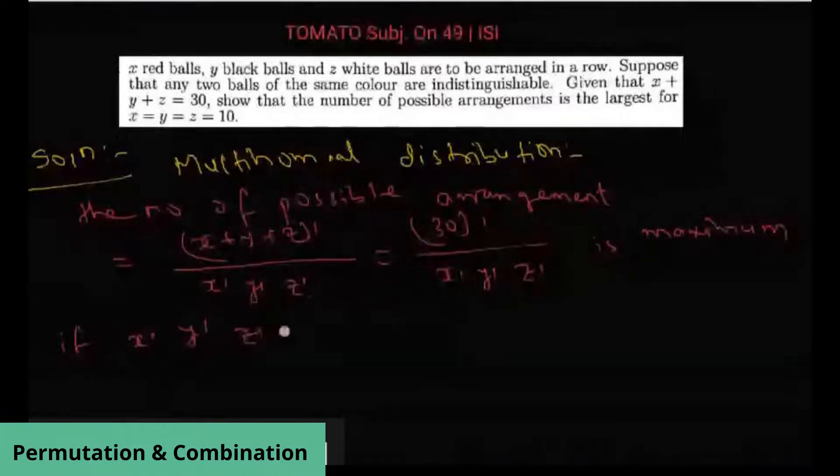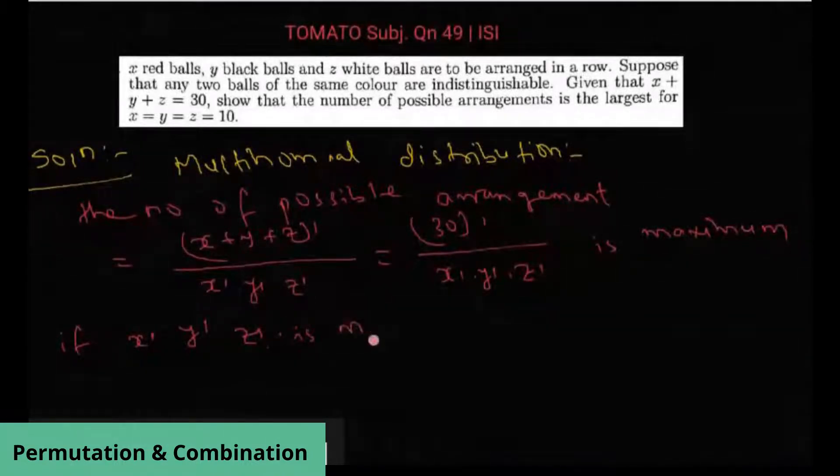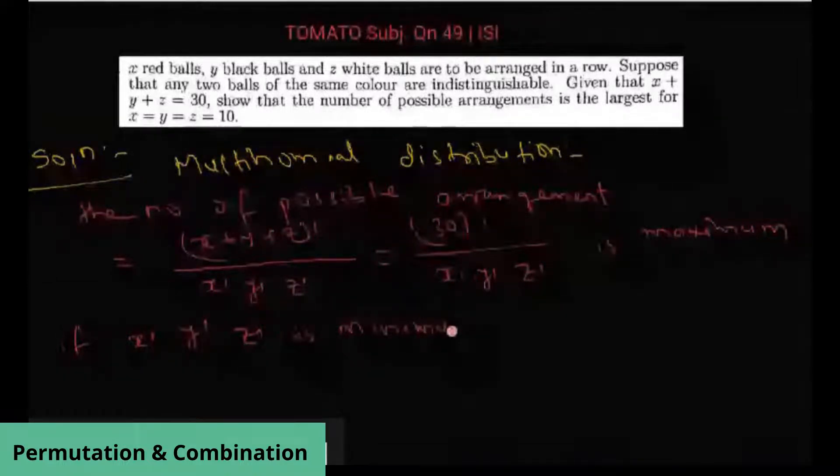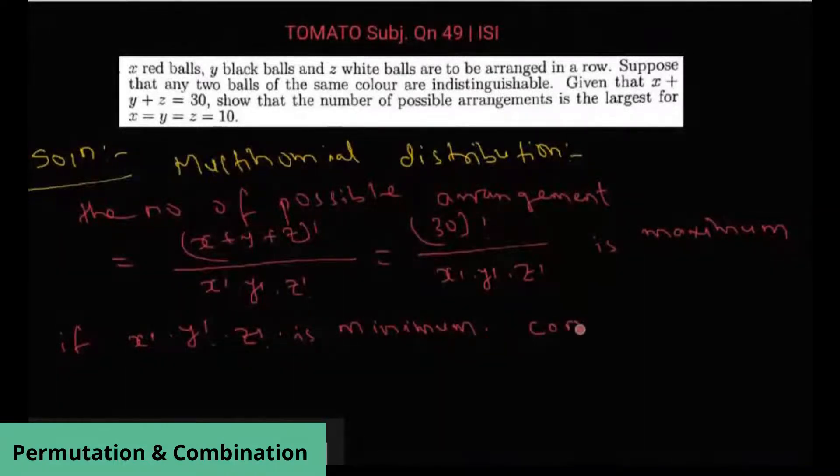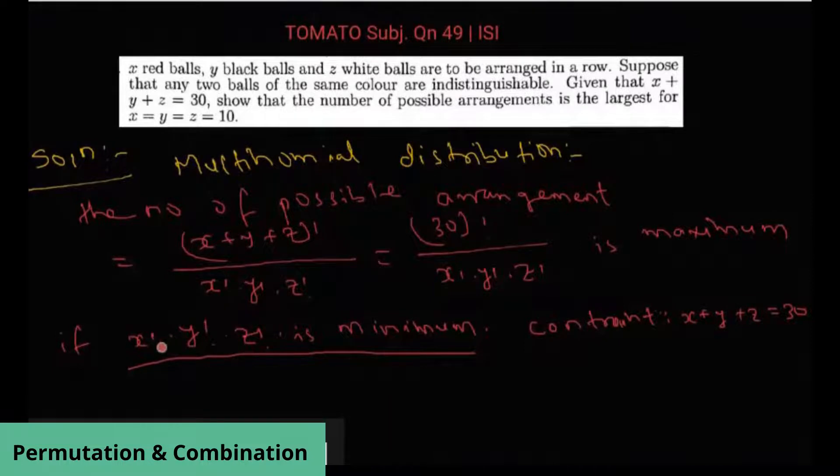This is maximum if the denominator is minimum. The denominator is minimum under the constraint that x plus y plus z is equal to 30. So notice that x factorial times y factorial times z factorial is minimum if x is equal to y is equal to z.